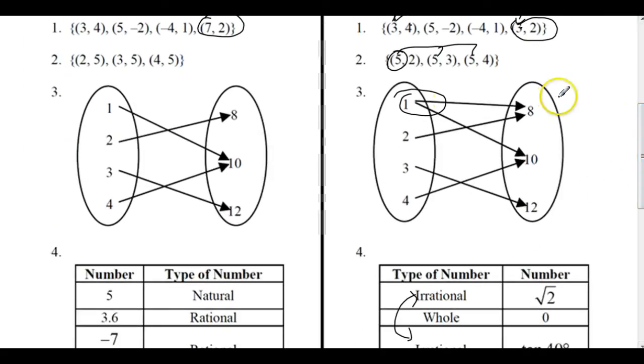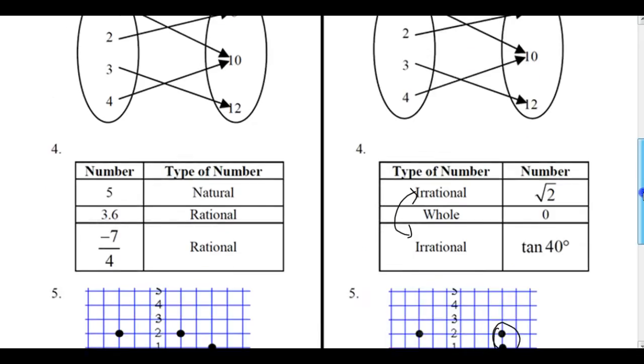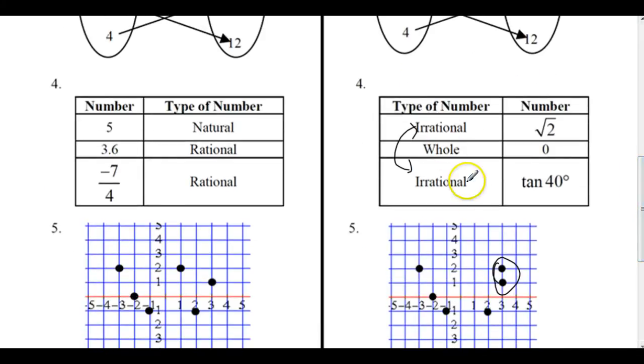The domain element 1 is associated with 2 different elements, not a function. The domain element irrational is associated with 2 different things, not a function.